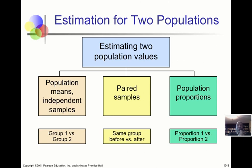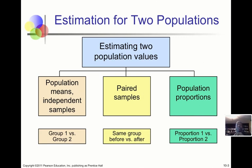We will consider two cases. One is where the two samples are independent of each other — meaning all the values in one sample have nothing to do with the values in the other. For example, if we took a random sample of drivers from Sydney and a random sample from Yarmouth and asked about their monthly gasoline expenditure, we would collect data from two independent groups with no connection between them.